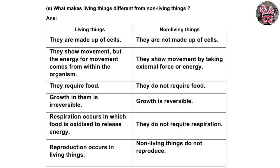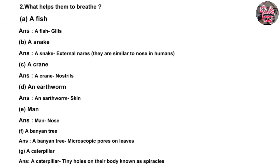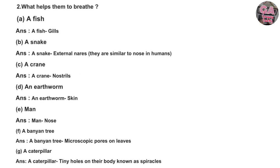We completed question one. Now question two: What helps them to breathe? A. Fish — gills. B. Snake — external layers similar to a nose in humans. C. A crane — nostrils. D. An earthworm — skin. E. Man — nose. F. Banyan tree — microscopic pores on leaves. G. Caterpillar — tiny holes on their body known as spiracles.